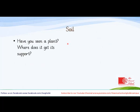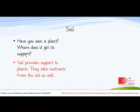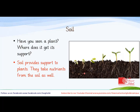Soil is another important factor. The plant you saw in the previous picture was standing — where does it get its support? That support is provided by the soil. Soil provides support to plants, and they take nutrients from the soil as well. When the plant is very small, it starts getting its roots out. As the roots go into the soil, the plant keeps growing.